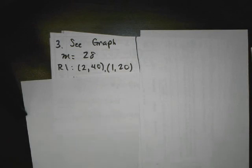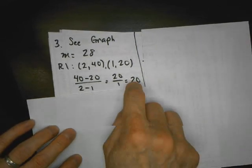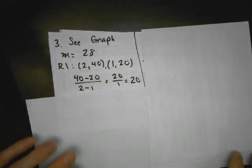So if I look at relation 1, relation 1 gives me two coordinates. And I go y minus y over x minus x. And I get a slope of 20. Well, that's not a greater absolute value than 28, so that's not steeper.